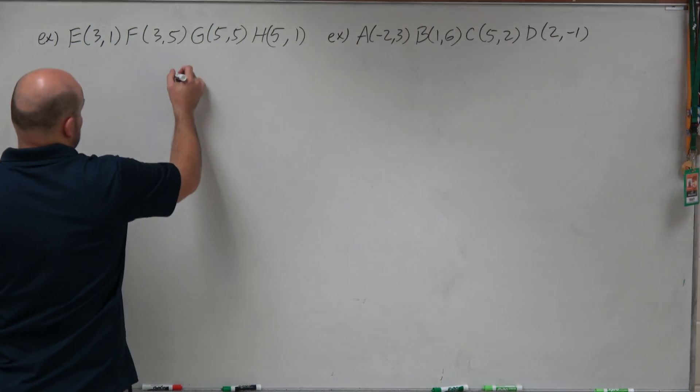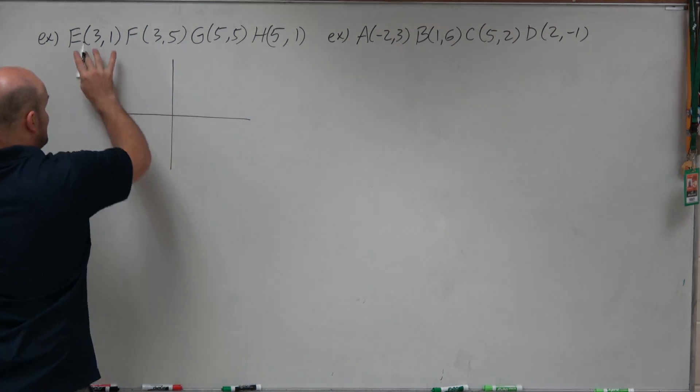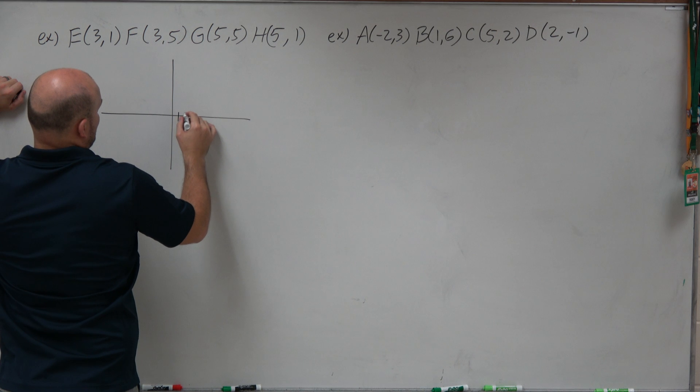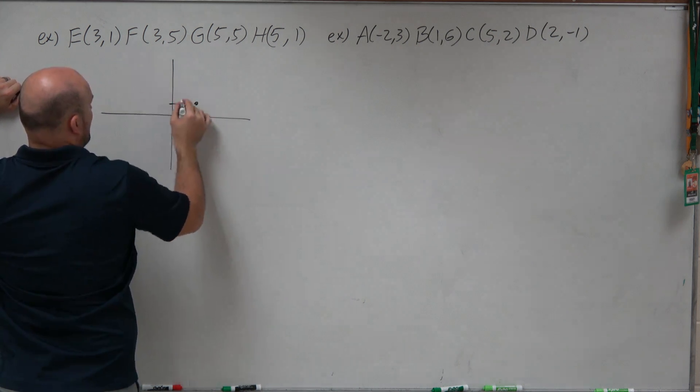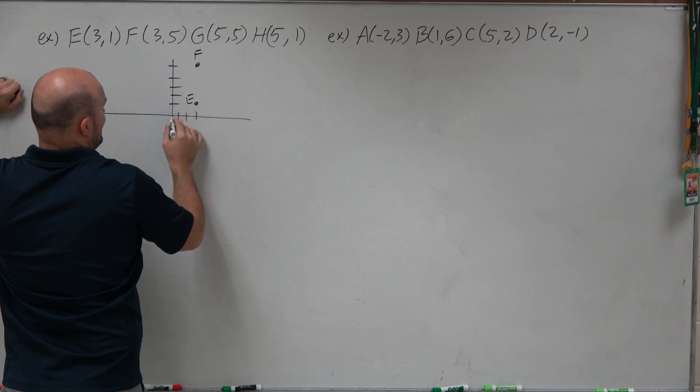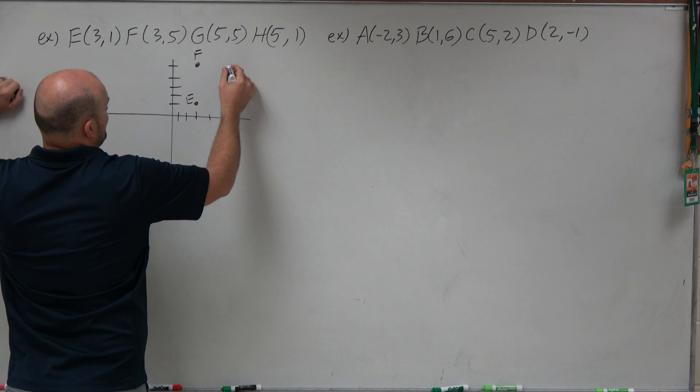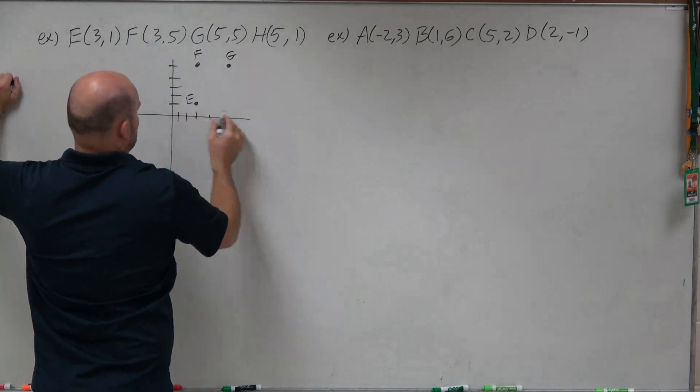The first thing I'm going to do is plot them on the Cartesian coordinate system and label every single point. So E is going to be at (3, 1). F is going to be at (3, 5). G is going to be at (5, 5). And H is going to be at (5, 1).